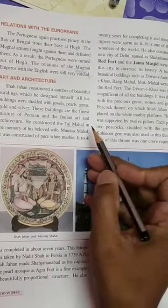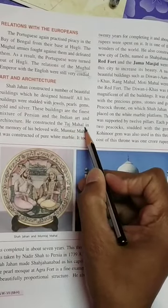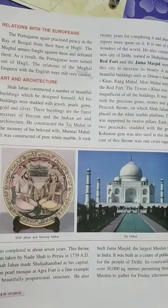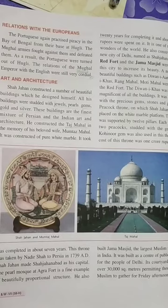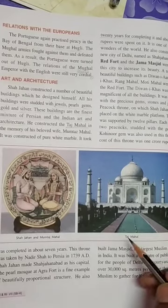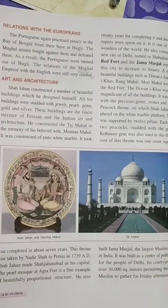He also constructed the Taj Mahal in memory of his beloved wife Mumtaz Mahal. It was constructed of pure white marble. This is the Taj Mahal, which is one of the Seven Wonders of the World. It was built from pure white marble, as you can see in this picture.